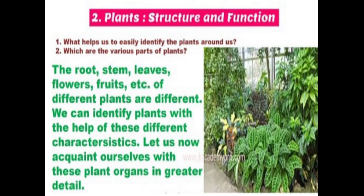The root, stem, leaves, flowers, and fruit of different plants are different. We can identify plants with the help of these different characteristics. The plants around us — hum unhye kaise identify karte hai — through their plant parts, that is root, stem, leaves, flowers, and fruit.